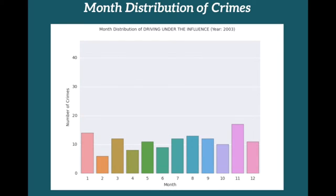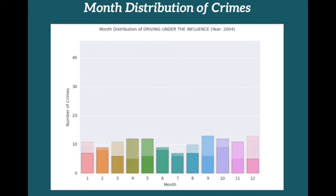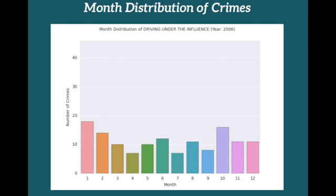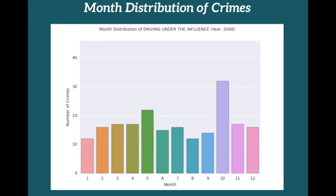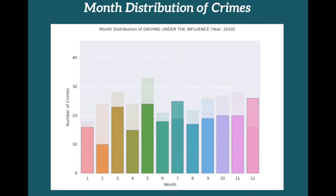Looking at the monthly distribution of crimes, we can see that the month may not have a high correlation with crime category. However, the graphs illustrate that the overall occurrence of crimes increased from 2003 to 2009 and has been decreasing since then.